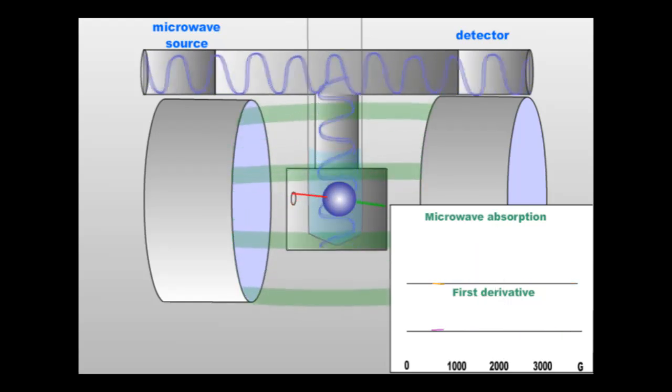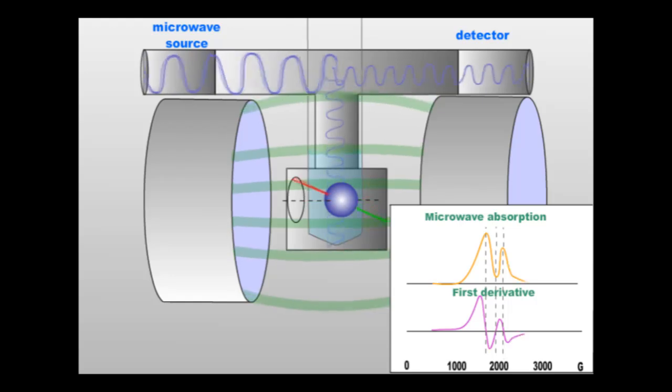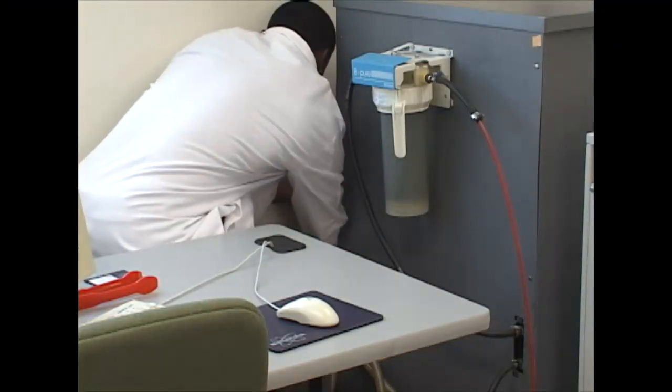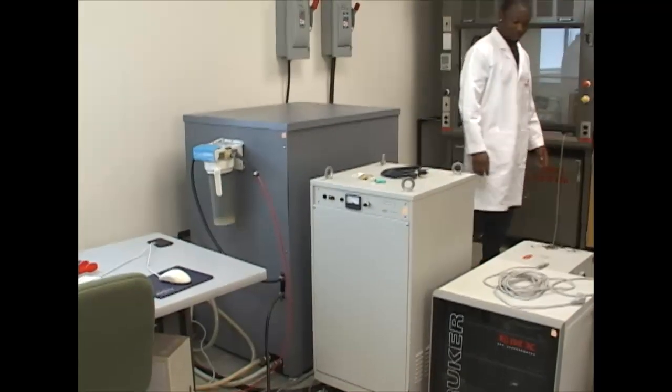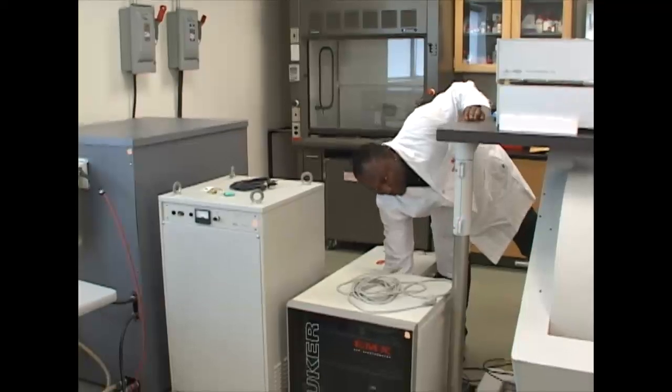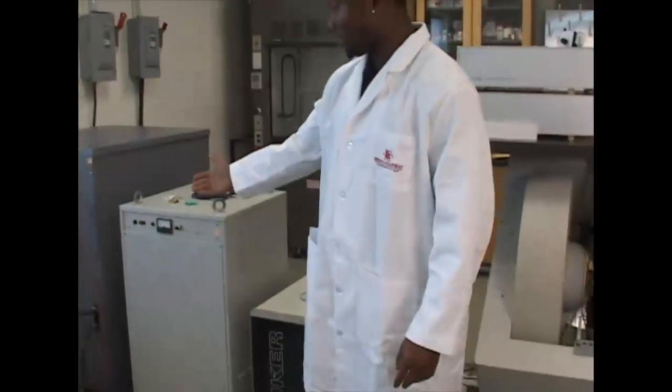The ESR machine automatically calculates the derivative of our sample. The first step is to turn the water on, then the heat exchanger, then the EMX, and finally the current control.